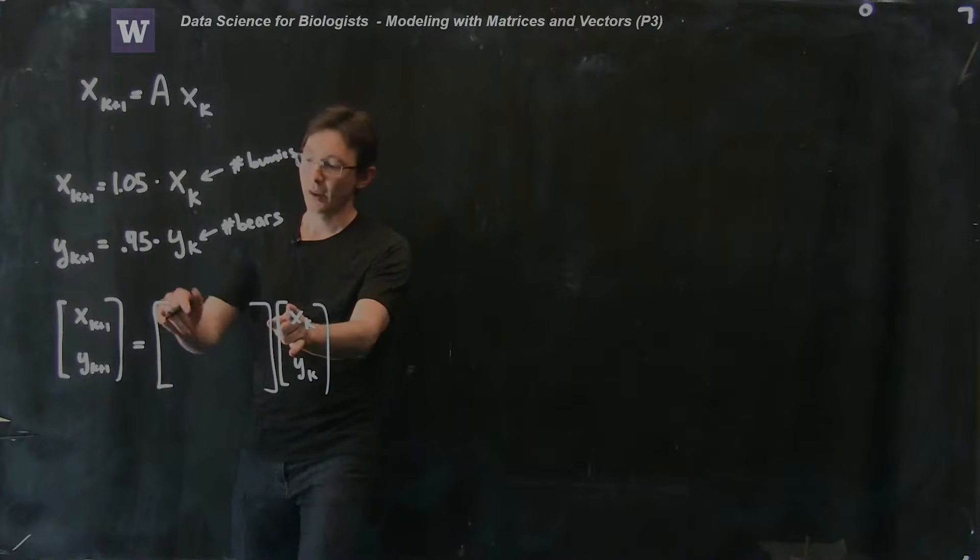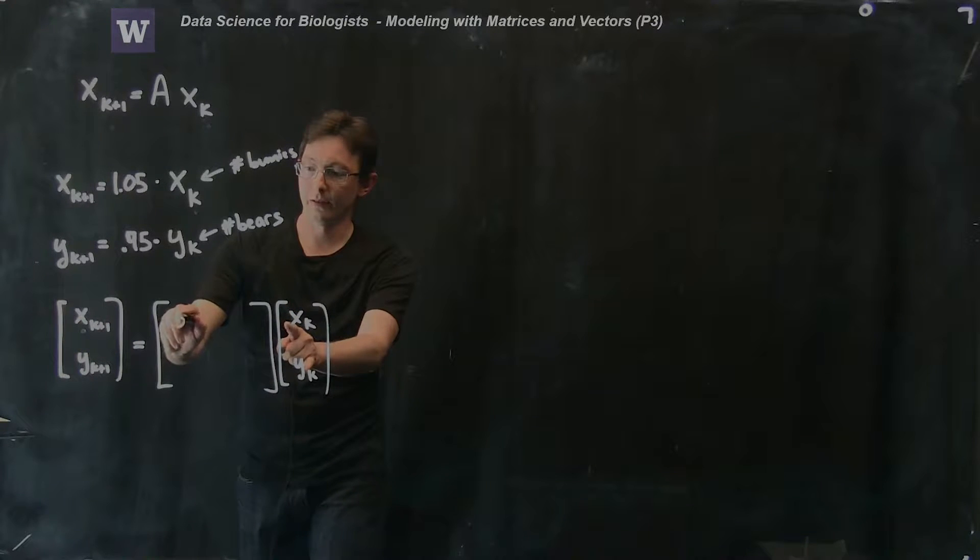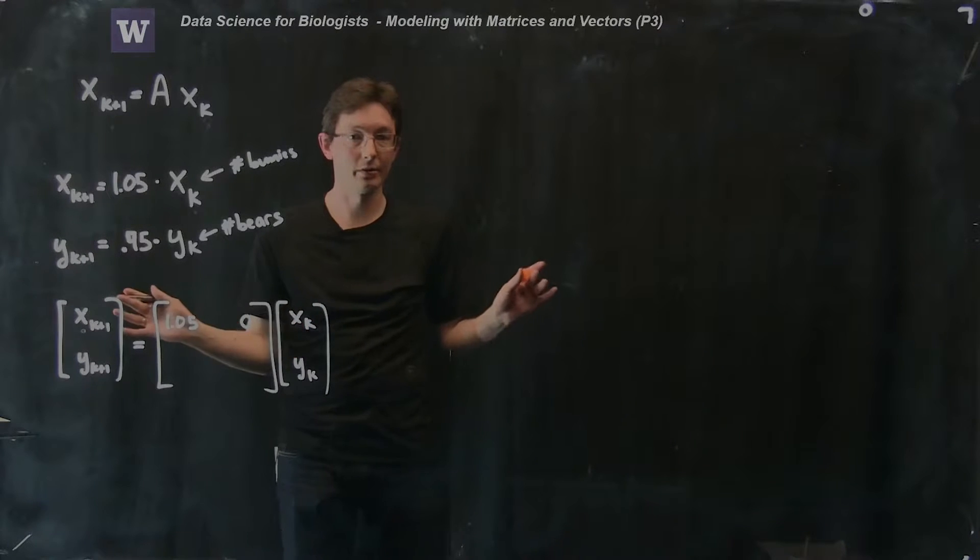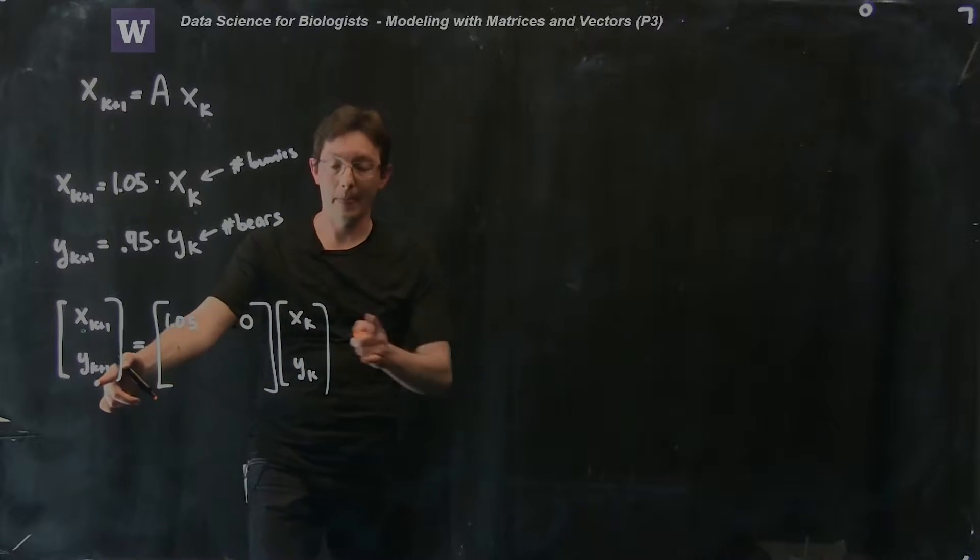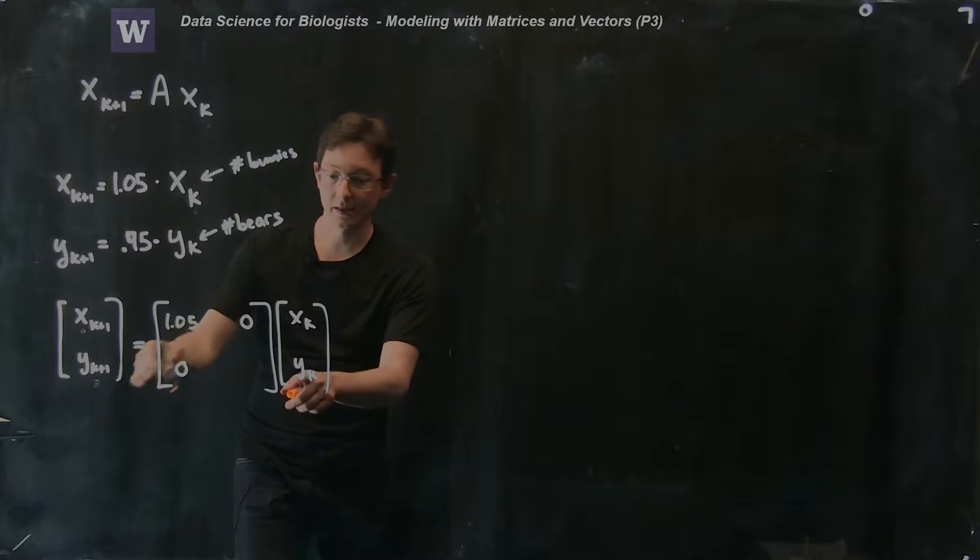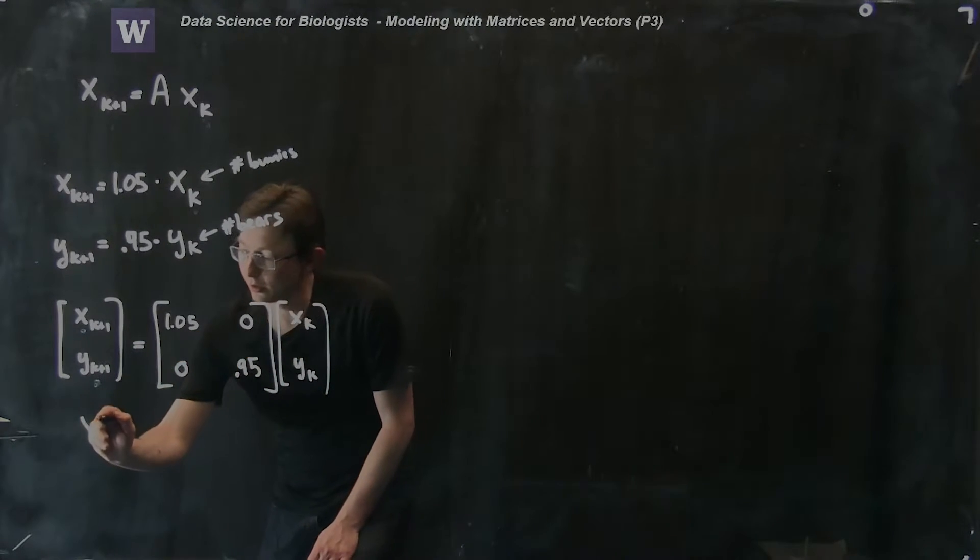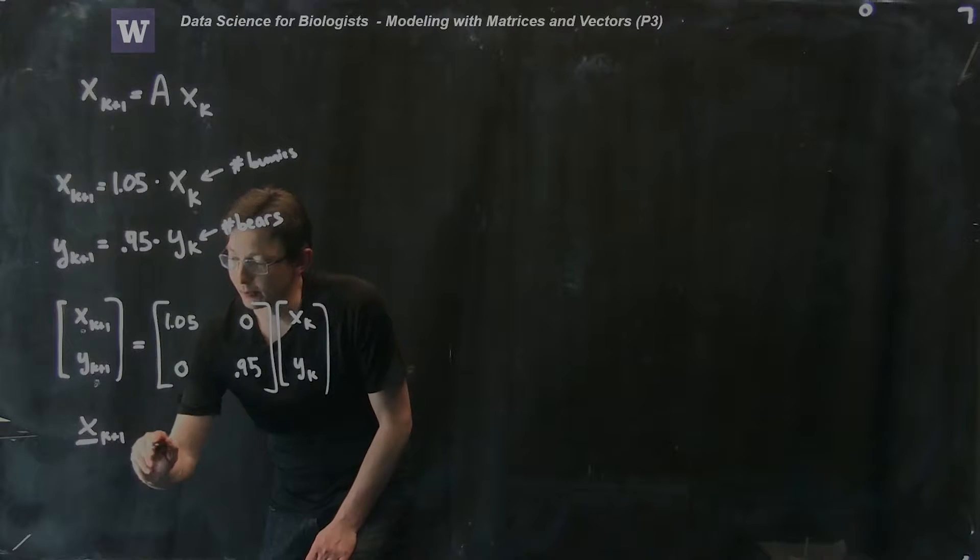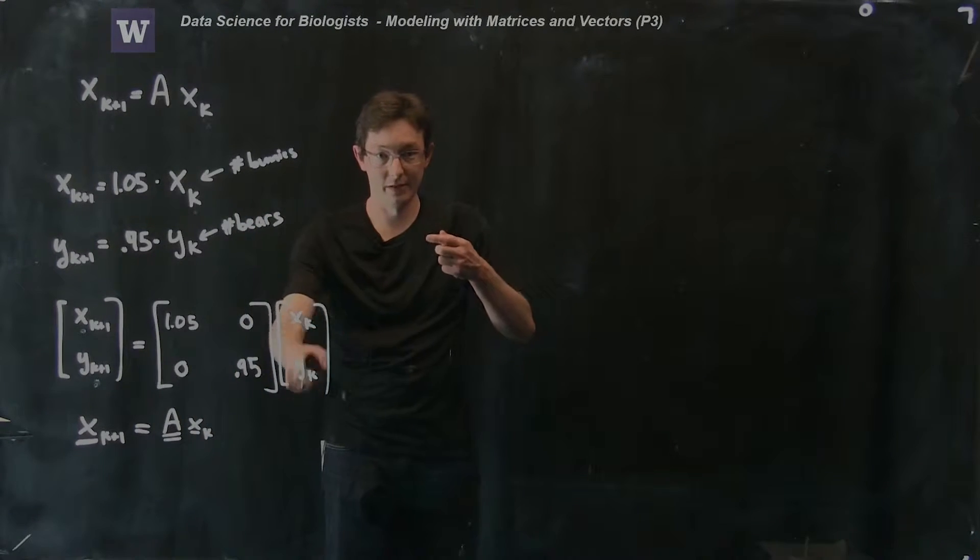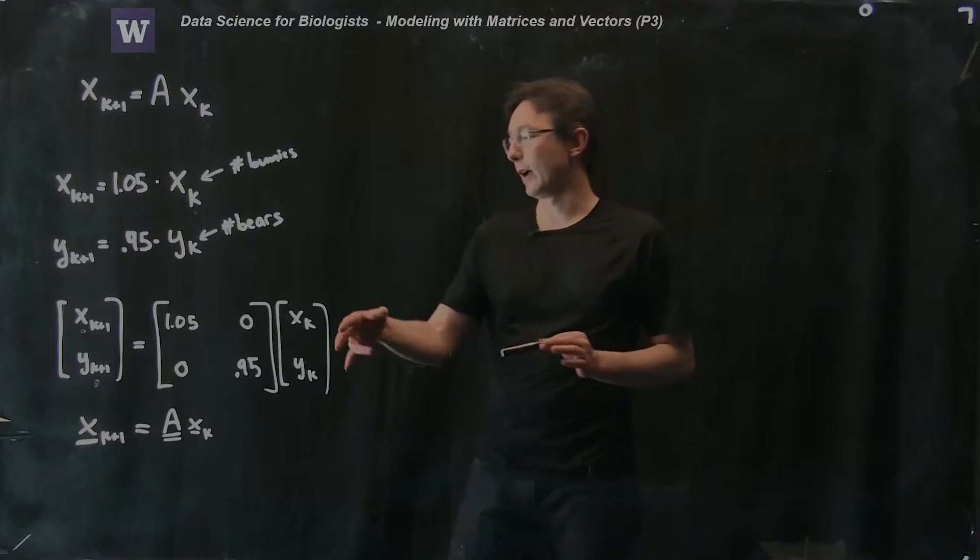So how do I read this off? How do my bunnies next year depend on my bunnies and my bears this year? Well, they're 1.05 times the number of bunnies this year, and they don't care at all about bears. They have no dependency on bears. So this is my number 0. My bears next year, how do they depend on bunnies and bears? Well, they have no dependency on bunnies, and the number of bears next year is going to be 0.95 times the number of bears this year. So this is my model, vector x at year k+1 is equal to matrix A times vector x at year k. Here this vector x is this whole x_k and y_k.